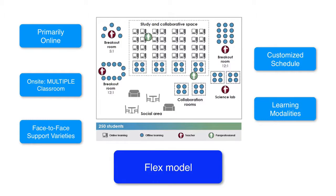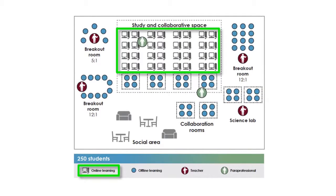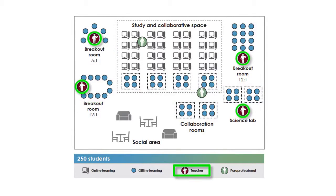Before discussing how projects and labs may look in a FLEX model, let's review the basic labels. Here you have online learning. Here is the offline learning. See how teachers are spread throughout the different learning modalities. Finally, see how the paraprofessionals play a role within the study and collaborative space.